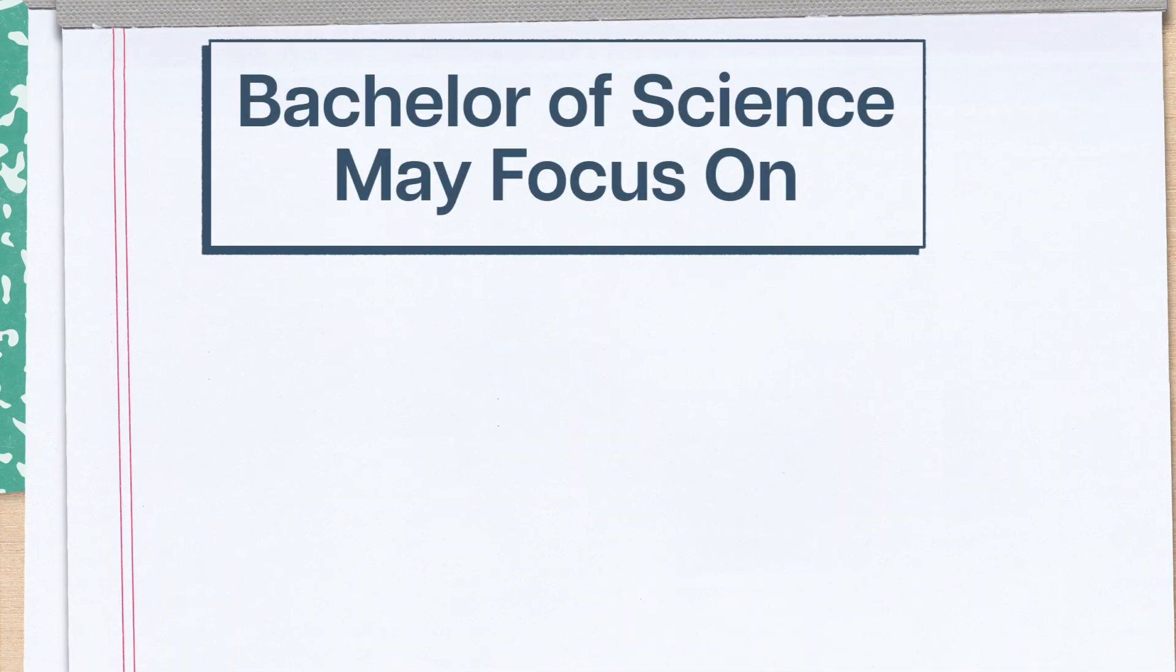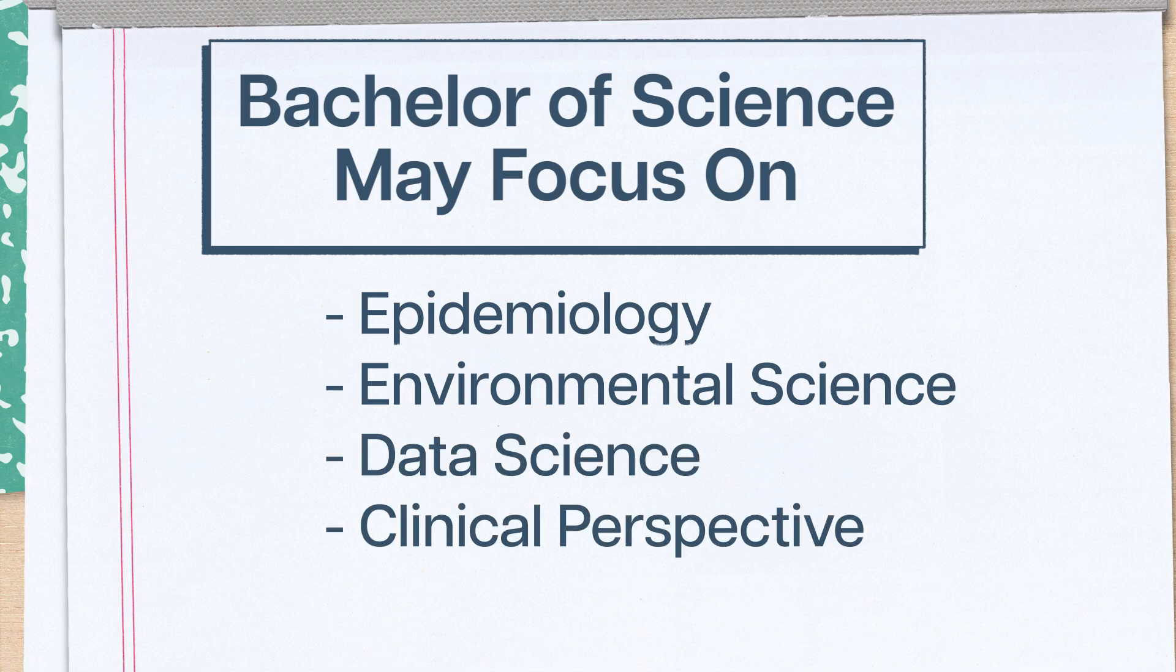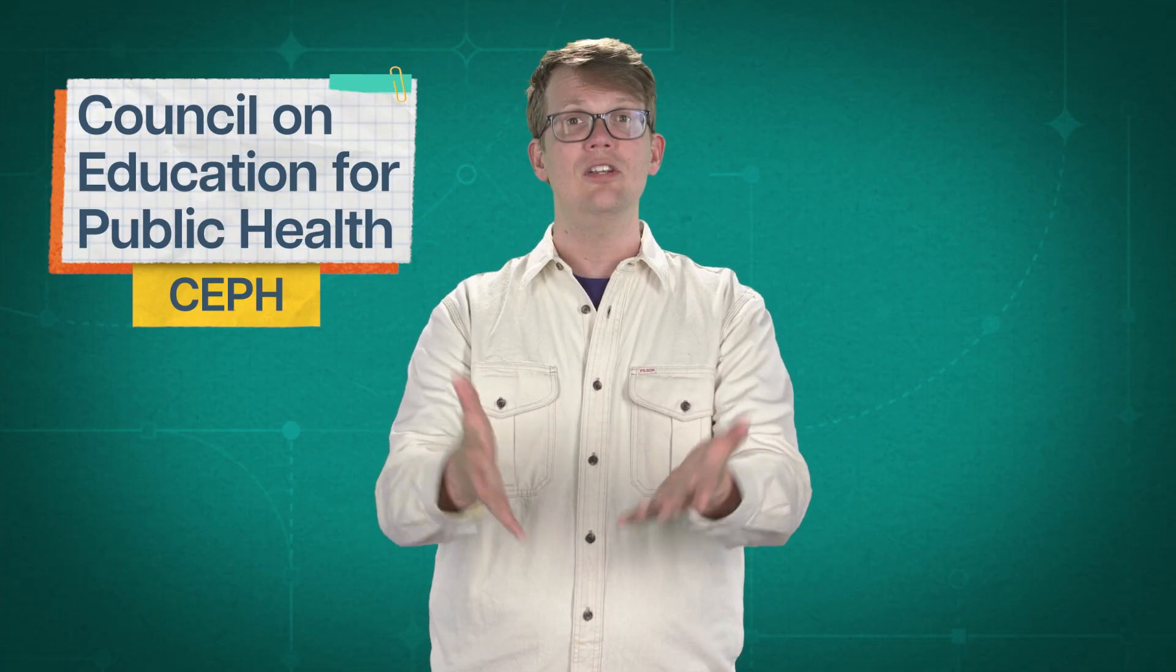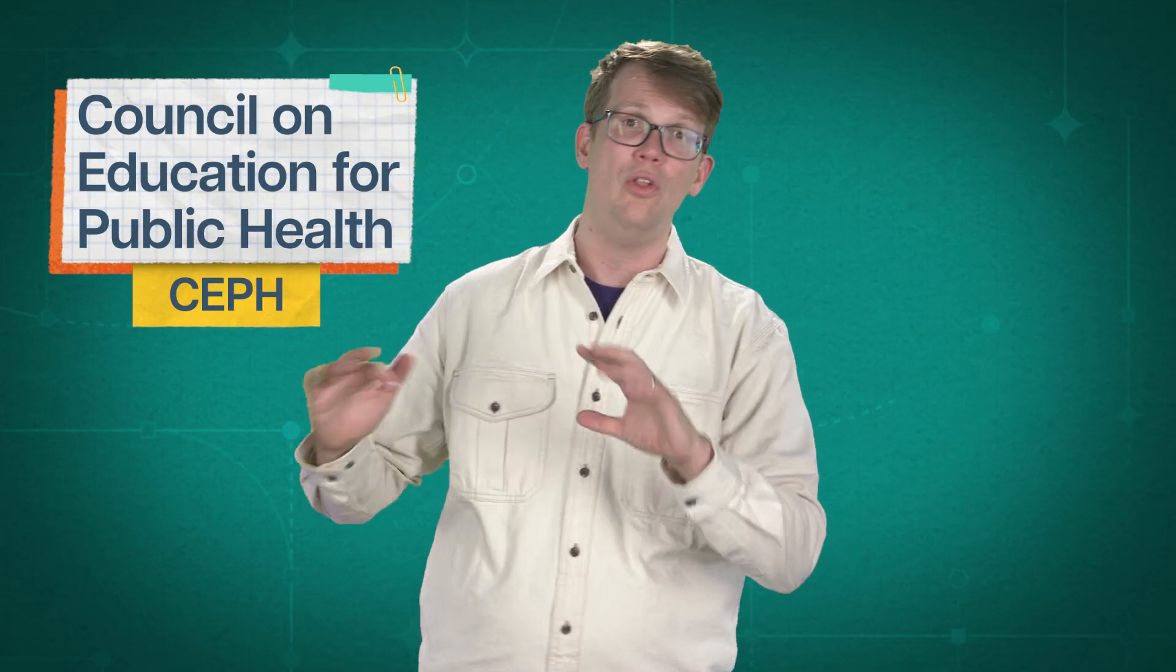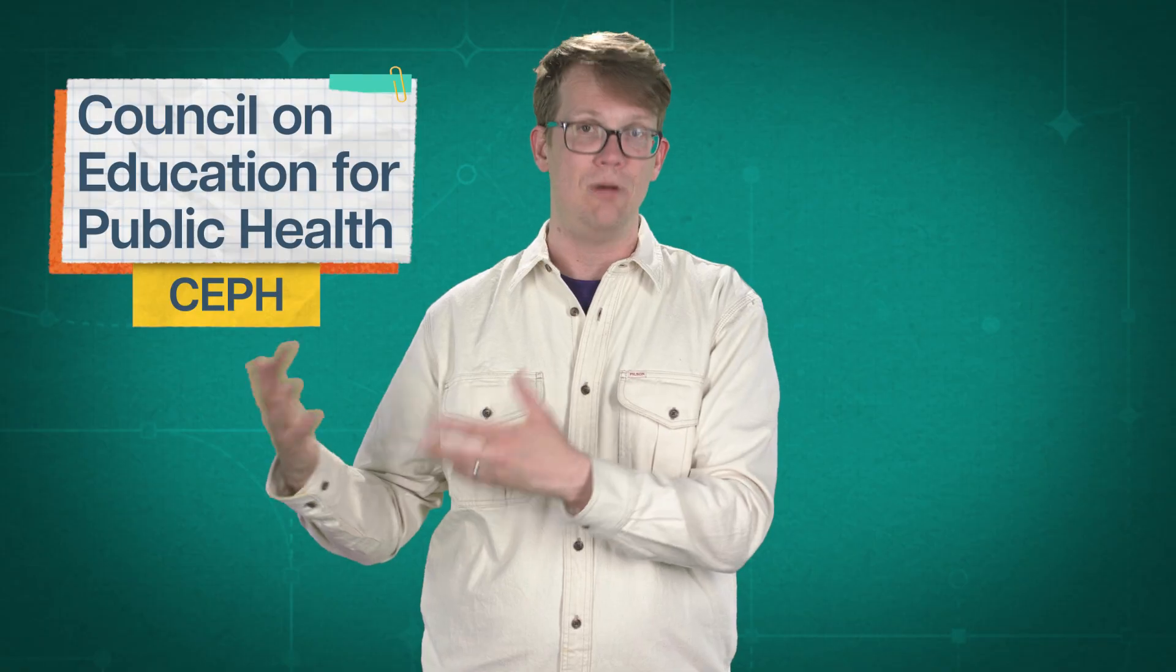Some schools also offer a fast-track bachelor's and master's program in public health, where you can get both degrees in five years. Whichever program you pick, it's important to make sure it's CEPH-accredited. This is an honor bestowed on worthy colleges by the Council on Education for Public Health, who check to make sure that the public health programs cover all those diverse aspects of public health. Some public health jobs, especially government ones, require you to graduate from a CEPH-accredited school, so it's a good idea to do your research before enrolling.